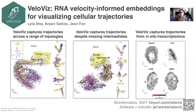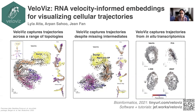VeloViz also works with single-cell transcriptomics from imaging data, as we show here with MERFISH of single-cell cycling in culture. VeloViz is available as an R package, and if you're interested in learning more about the details, please visit the package website and check out our paper in Bioinformatics.